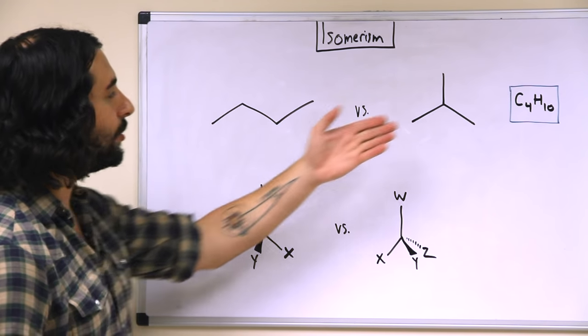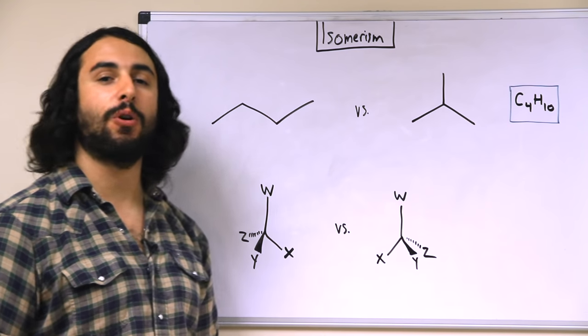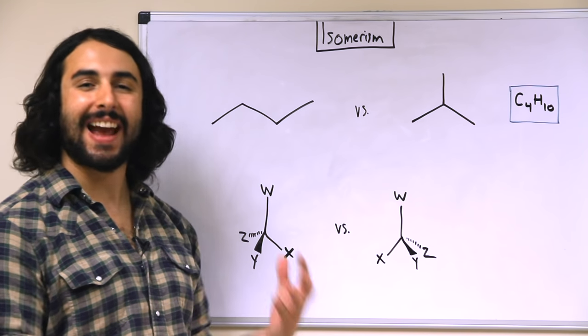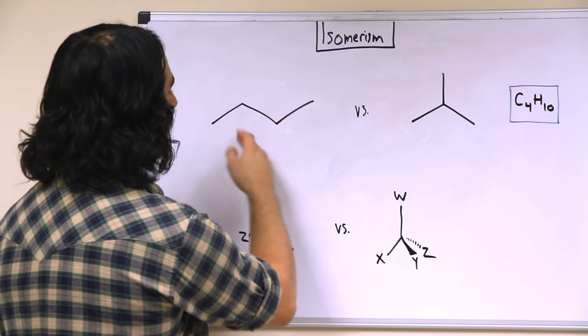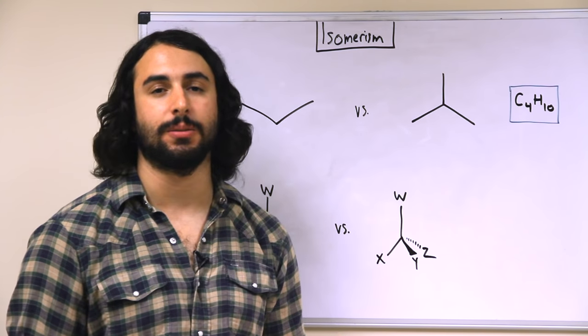So here's an example of two different butanes. We have straight chain butane and isobutane. They're both C4H10, but they're connected differently, right? As opposed to the straight chain, one of these carbons has been moved over to the middle. So those are structural isomers.